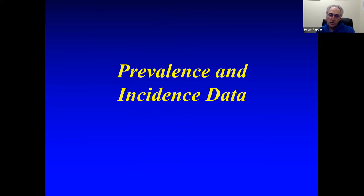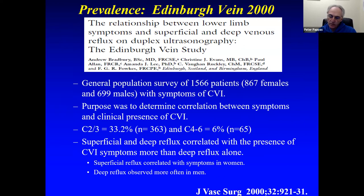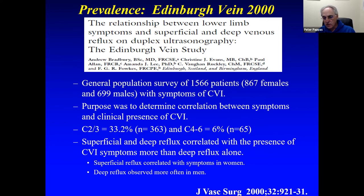There are literally 10 or 15 epidemiologic studies, so we're going over the most quoted and most impactful ones. The Edinburgh Vein Study, published in 2000 in the Journal of Vascular Surgery, was the first epidemiological survey of prevalence in the general population. Andrew Bradbury took 1,500 random patients, asked about symptoms consistent with venous insufficiency — pain, swelling, tired/heavy/achy legs, tightness — then duplex scanned all of them. He found that 32–33% had C2 or C3 disease and about 6% had C4–C6 disease.